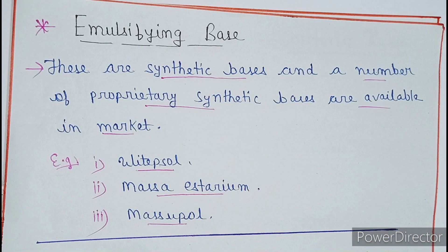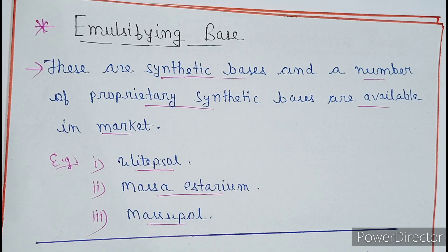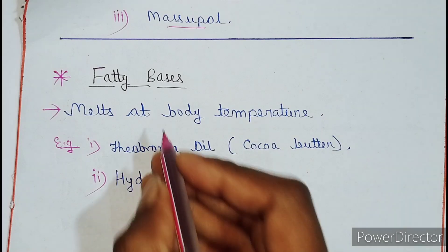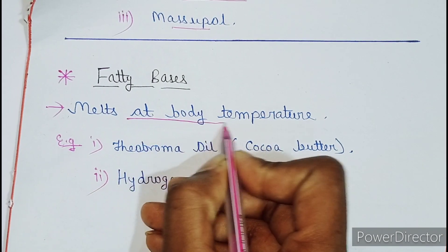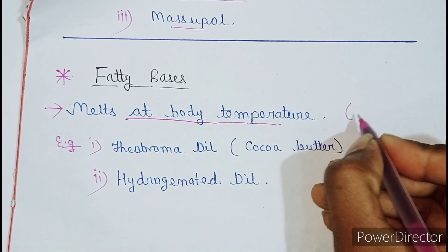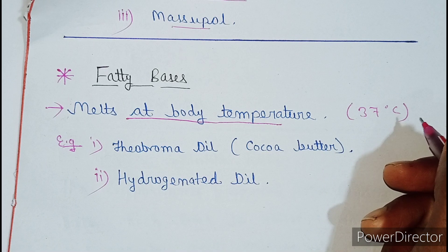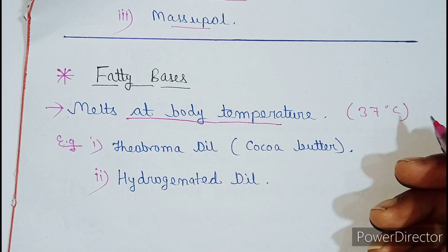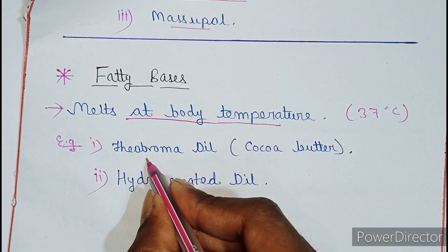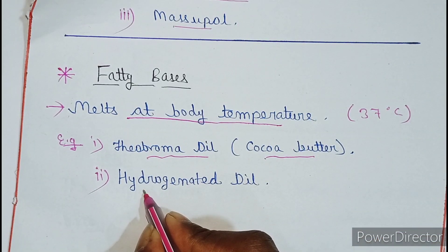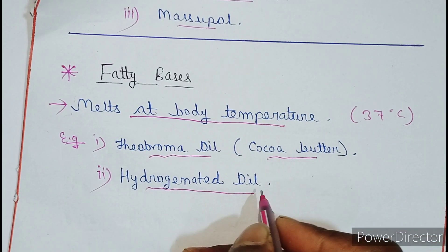The next one is fatty bases. Many fatty bases are used, and they melt at body temperature, which is 37 degrees Celsius. Examples of fatty bases are: theobroma oil, also called cocoa butter, and the second one is hydrogenated oil.